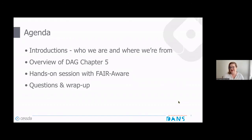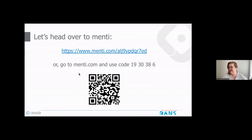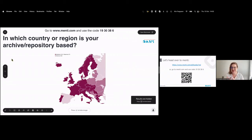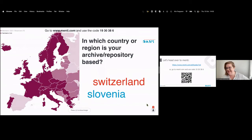We have a Mentimeter for you — Maike will put the link in the chat. The first question is which country or region your archive or repository is based in. Results showing: Switzerland, Slovenia, Estonia, Norway, Netherlands. We have a good representation of countries that begin with S in English.